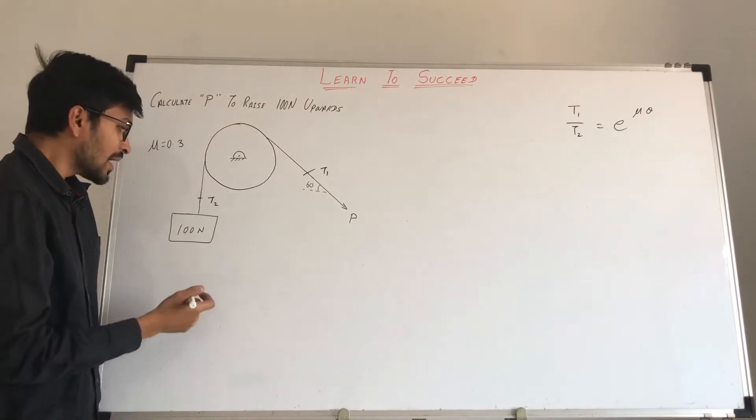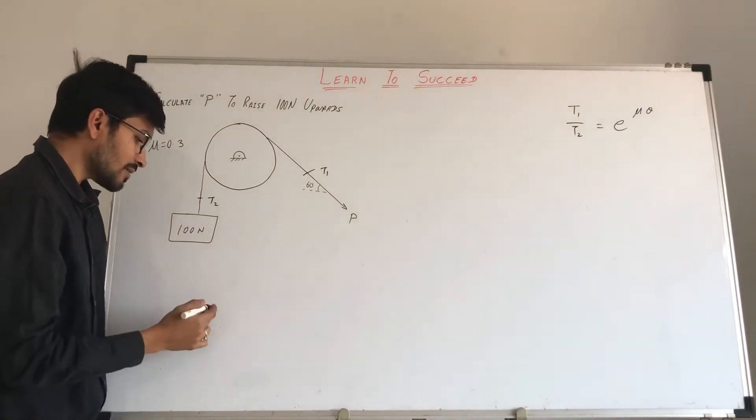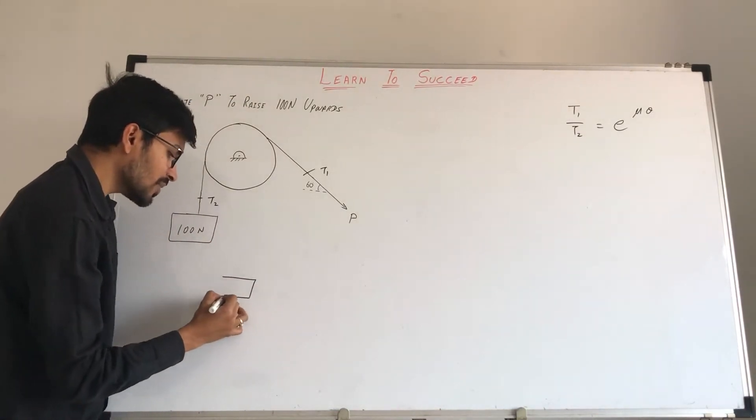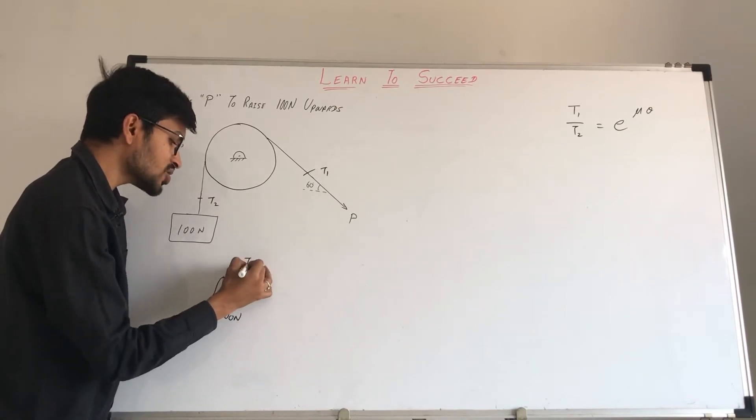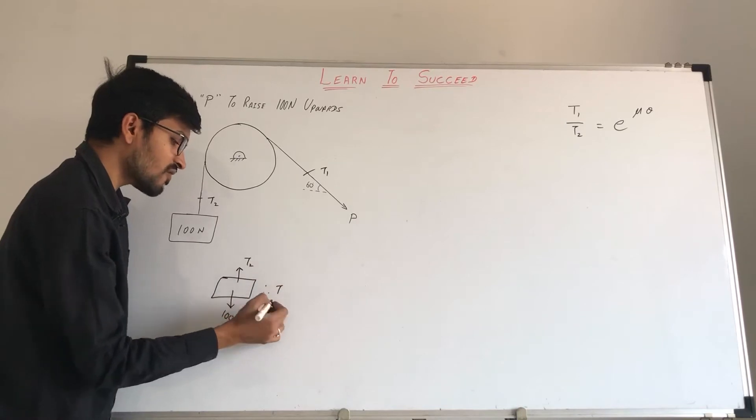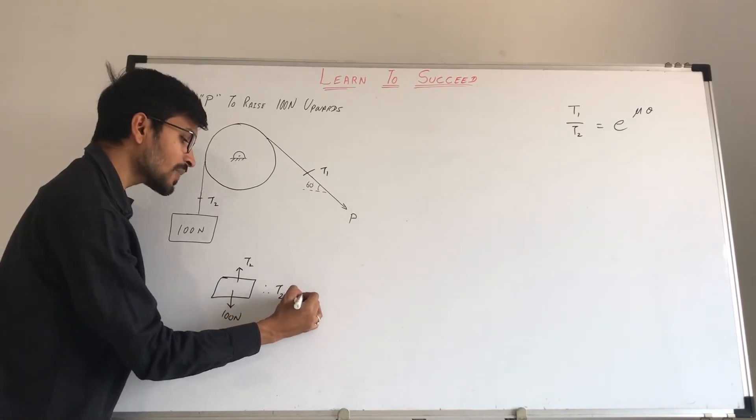So we will find all values. First we will solve this 100 N block. If we make its FBD, then it will go vertically down 100 N, and here on the top its tension is T2. Therefore, we will do summation of y, so we will get T2 equals to 100 N.